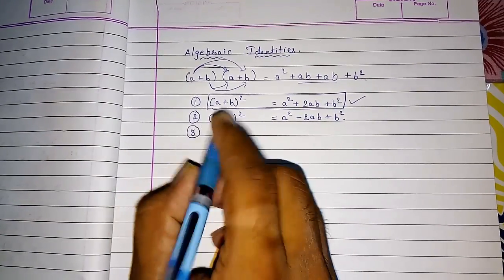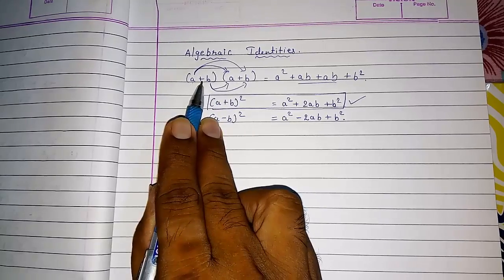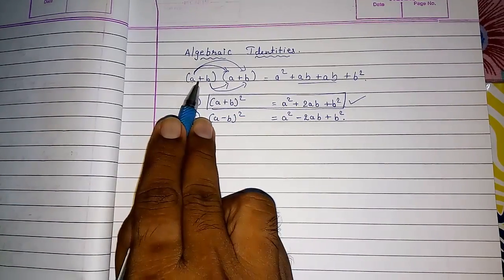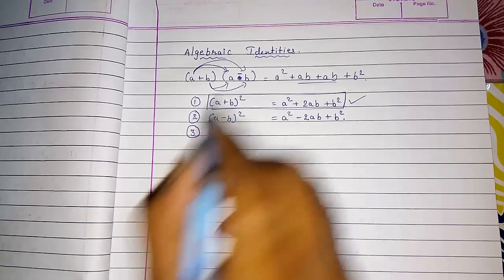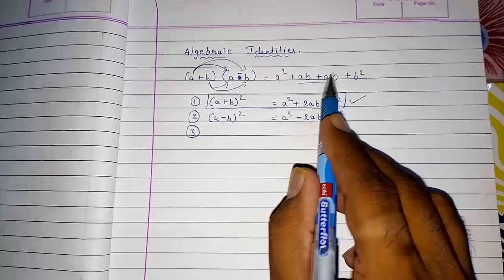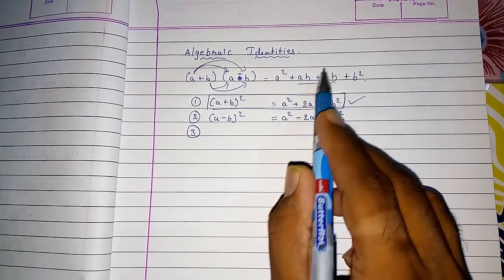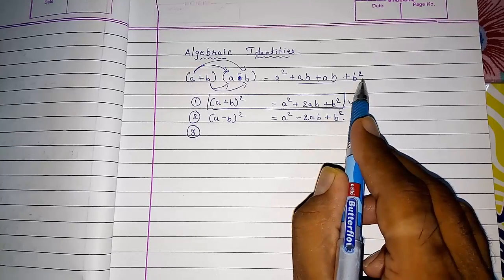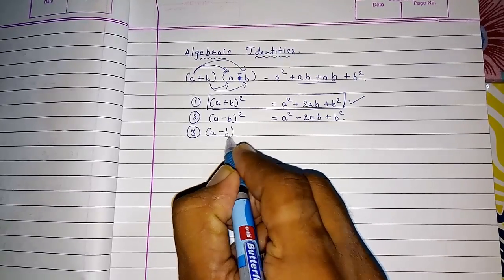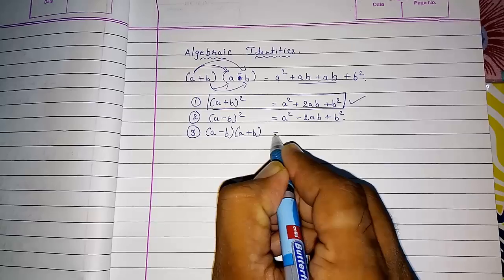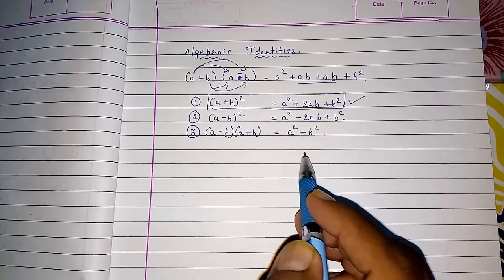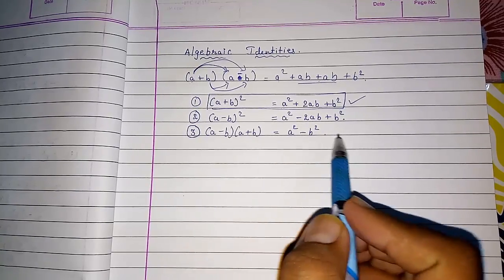Now the third identity. Here you are multiplying two numbers — one time plus plus was there, one time minus minus was there, and now one time plus and one time minus is there. Then what will happen? A square will remain. But here one time plus will come and one time minus will come, so both will get cancelled, and minus B square will come. So A minus B into A plus B gives you A square minus B square.